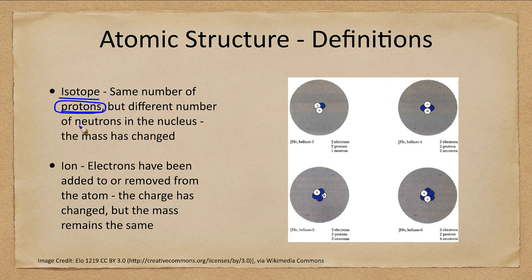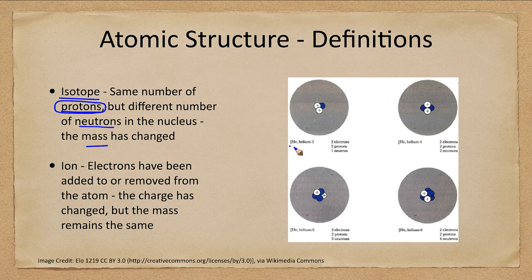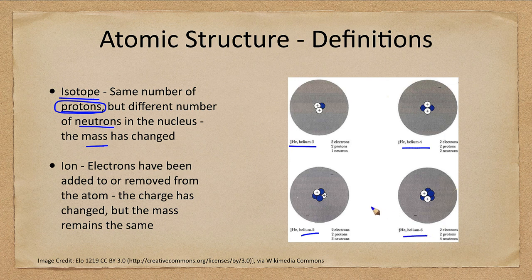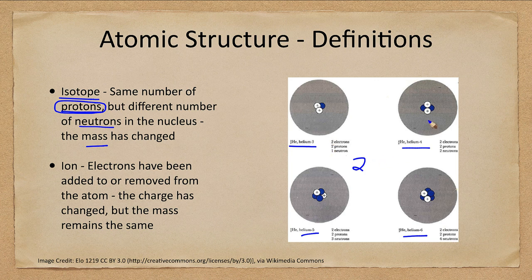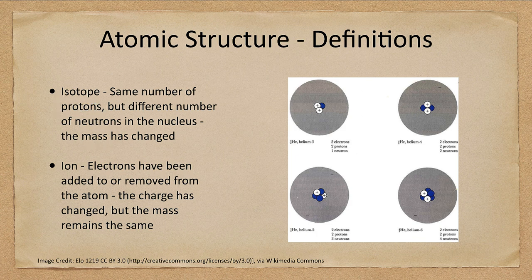When you have a different number of neutrons then the mass has changed. So here we see various isotopes of helium. There's helium three, helium four, helium five, helium six. Note that every single one of them has two protons. So we see two positive charges here, here, here, and here. But what differs is the mass by the number of neutrons. This one has a mass of three because it only has one neutron. This one is four with two neutrons, five with three and six with four. So the atom is defined by the number of protons. The isotope then is a different number of neutrons.